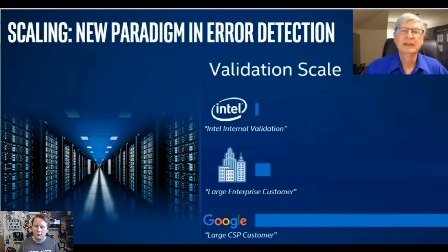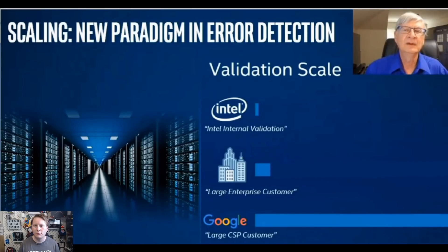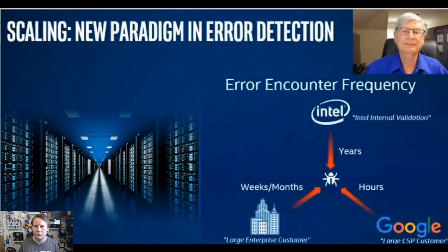"With hyperscale computing, that runs the risk that you begin seeing things far more frequently that were intermittent before. Soft error was originally detected when we started to build large enough scale systems that you could begin to see those. This creates a need to think about not just reliability from an error prevention standpoint — although we need to focus on that as well — but reliability in the sense of how do you make a system resilient? How do you detect, correct, and move on, particularly if statistically your error encounter frequency is over a very broad timescale, depending on the scale of the system that you're looking at?"